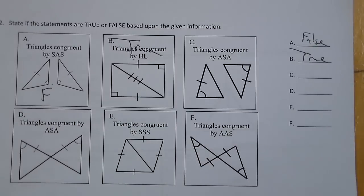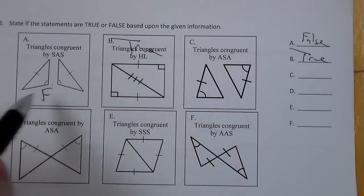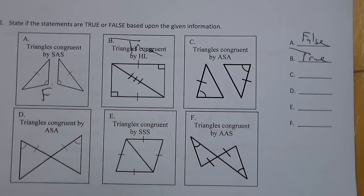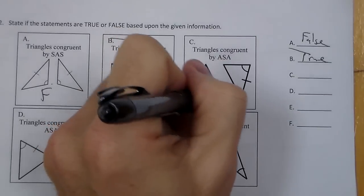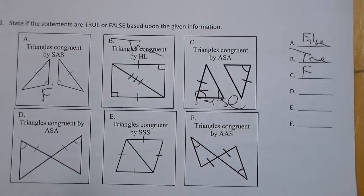For C, we have triangles congruent by angle, side, angle. Kind of like A. These are not next to each other. I don't have two sets of angles. So this one is False. Not enough information.